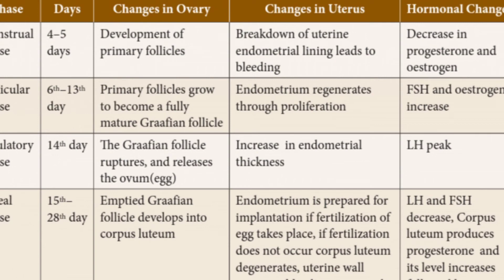The next phase is the ovulatory phase, occurring on day 14. The Graafian follicle breaks and releases the ovum or egg — this is called ovulation. In the uterus at this stage, the endometrium increases in thickness. The hormonal change is that the luteinizing hormone (LH) reaches its peak level.